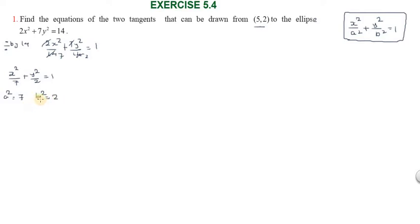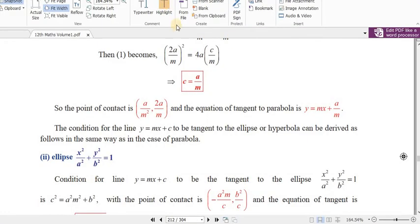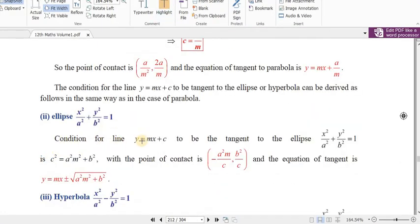So a² = 7 and b² = 2. Now we are going to find the equation of the two tangents that can be drawn from (5, 2). The general tangent condition for the line y = mx + c to be tangent to the ellipse x²/a² + y²/b² = 1 is c² = a²m² + b².